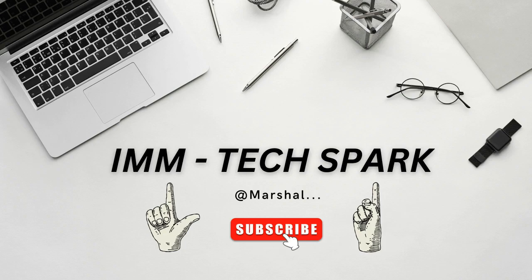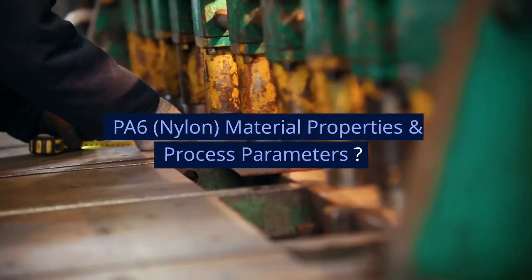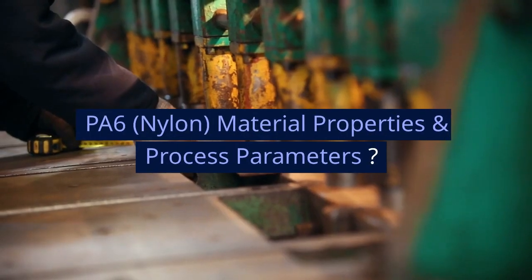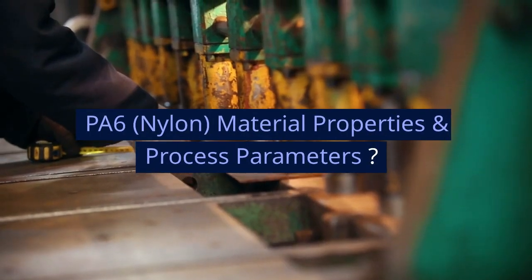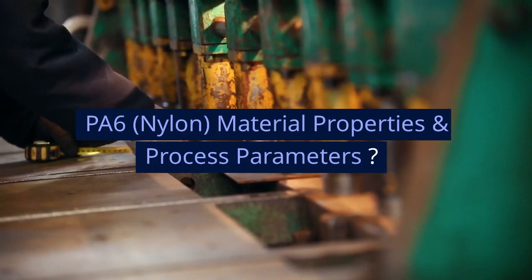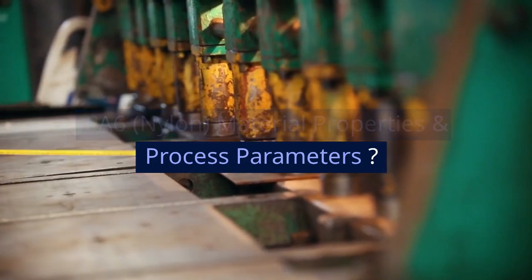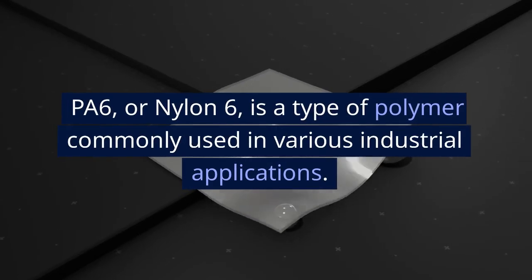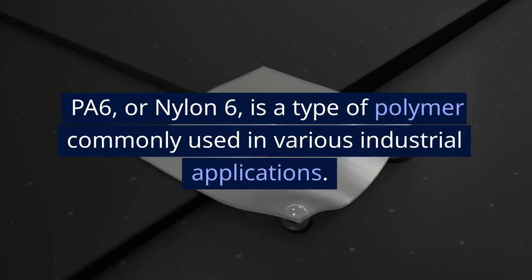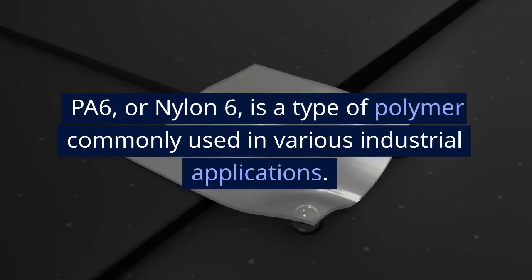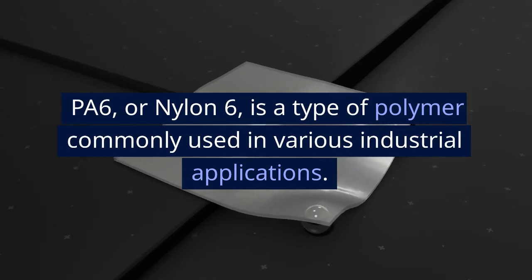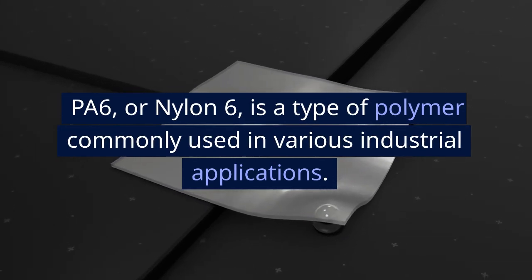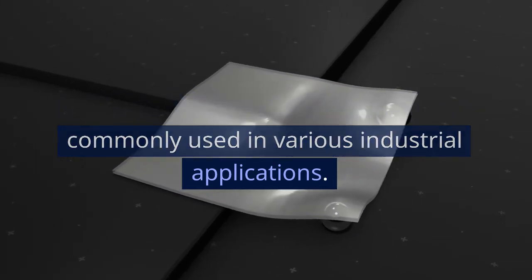Welcome to our YouTube channel. PA6 nylon — material properties and process parameters. PA6, or nylon 6, is a type of polymer commonly used in various industrial applications.